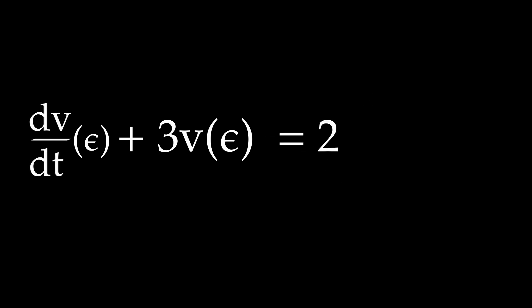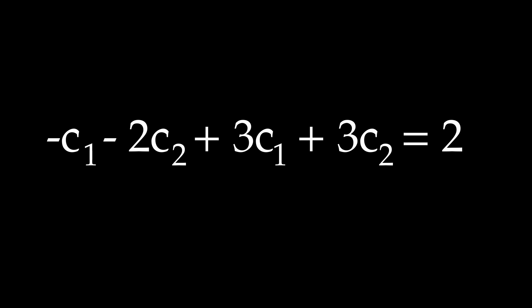So now we get this relationship. Plugging in the v that we had, we get that c2 equals minus 2.